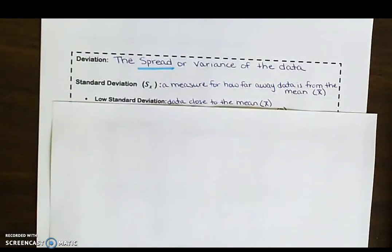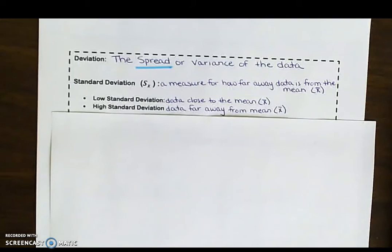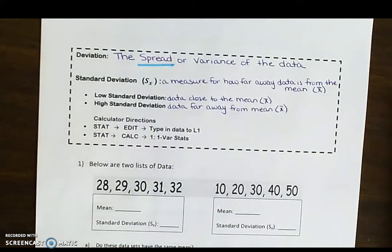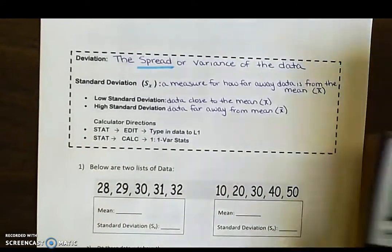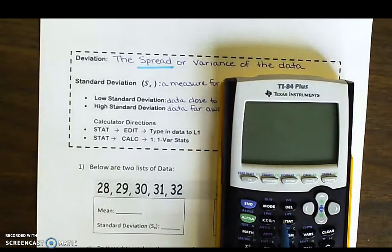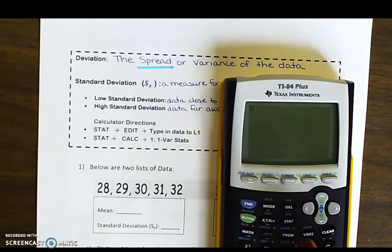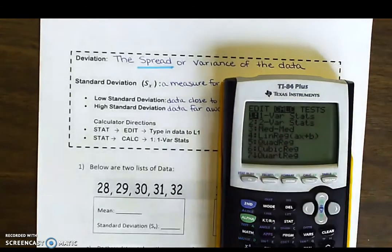If we have a low standard deviation, that means your data is very close to the mean — remember, the symbol for that is X with a bar on top. A high standard deviation is when the data is very far away from the mean, to both extremes, very high and very low, above and below. To find the standard deviation on a calculator, we're going to use that stat button. First, hit edit and type the data into L1. Then go to stat, use the over arrow to highlight calculate, and one variable stats is your very first choice.